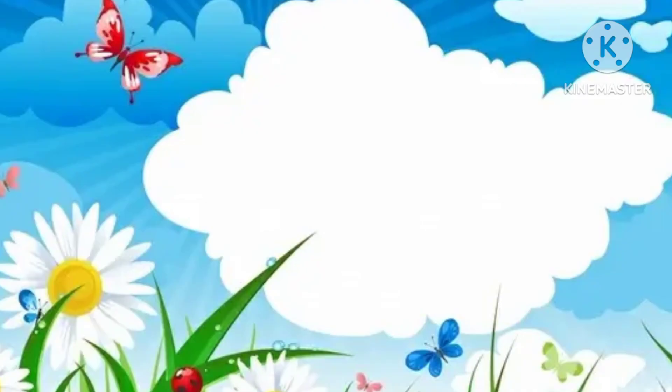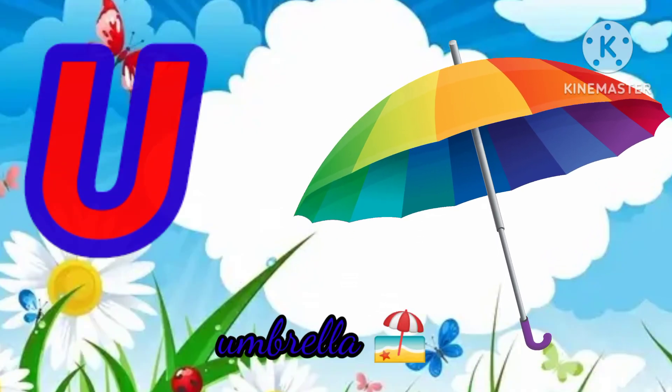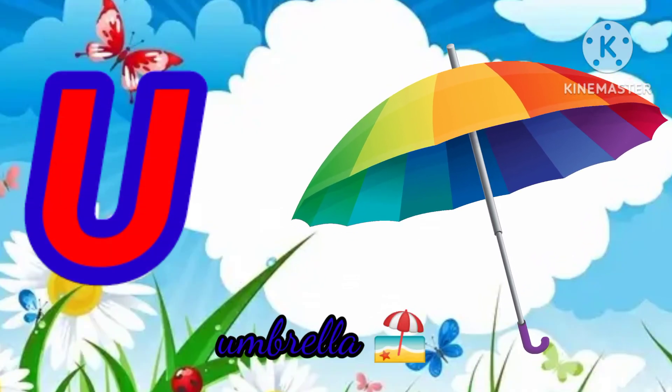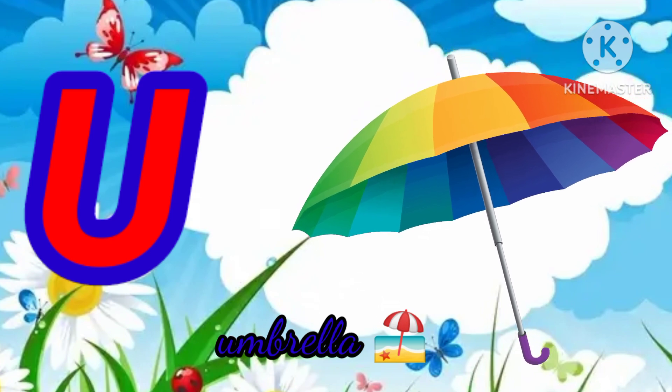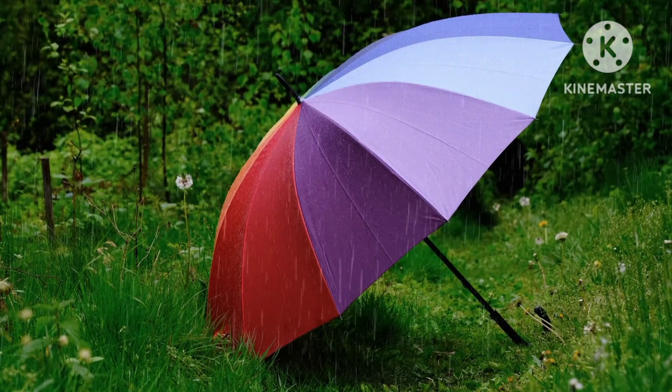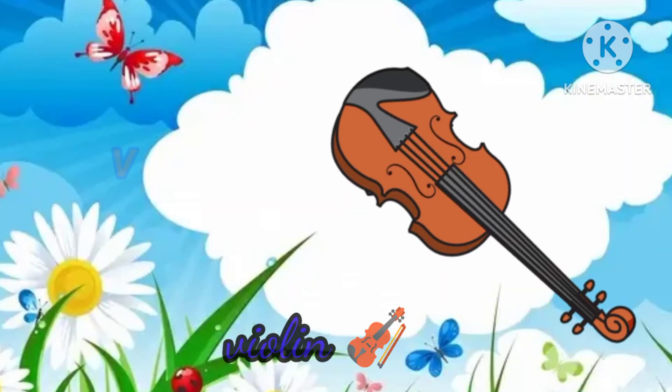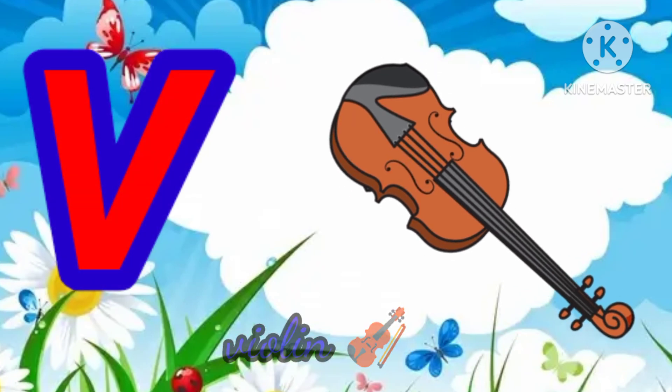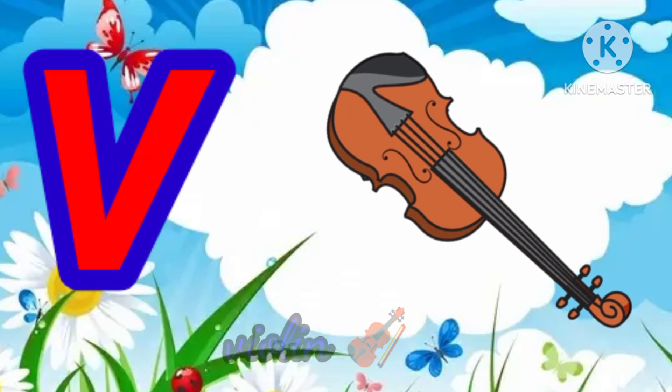U is for Umbrella. U. Umbrella. U. Umbrella. U. Umbrella. V is for Violin.